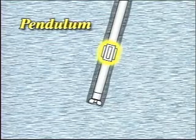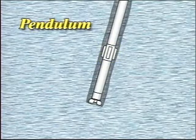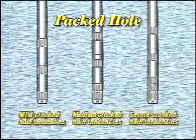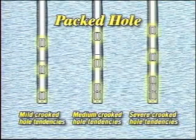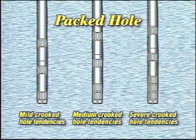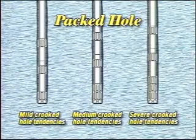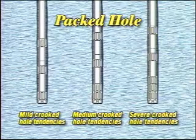Bottom hole assembly design must take into account a number of factors, but for the most part the design will be a variation on one of two basic configurations. The pendulum assembly employs a stabilizer up above the bit to center the drill collars and prop them away from the hole, increasing the straightening force and acting to reduce hole angle. The packed hole assembly consists of large diameter drill collars, which impart stiffness, and multiple stabilizers, which guide the bit straight ahead — when properly designed for the formation, it can be quite effective at maintaining a constant hole angle. Keep in mind that stabilizers, especially large diameter ones, add torque to the drill string, may reduce available weight on bit, accelerate hole erosion, and the smaller annular clearance of a packed hole assembly can greatly reduce the chances of a successful fishing job.